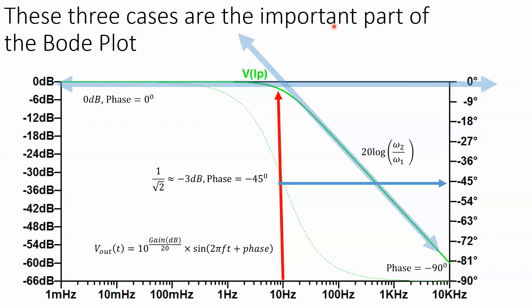These three cases are the important part of the Bode Plot. So here's the zero dB part where we're a lot less than the cutoff frequency, in this case 10 hertz. And you can see that's an asymptote that goes out that way.